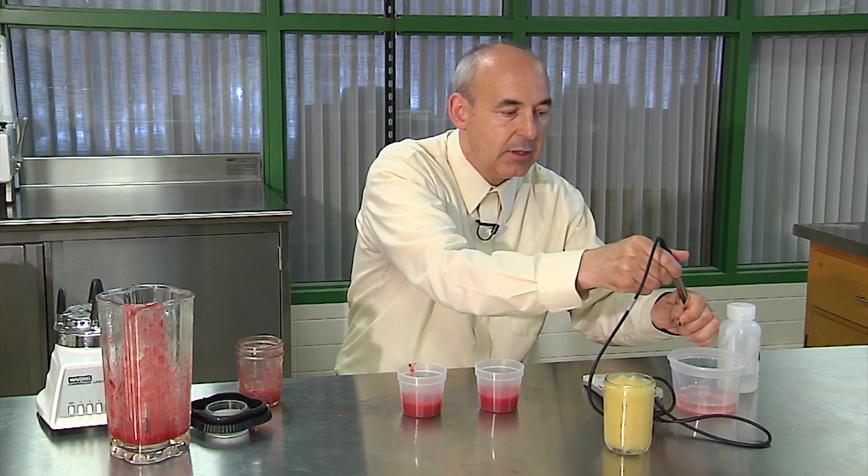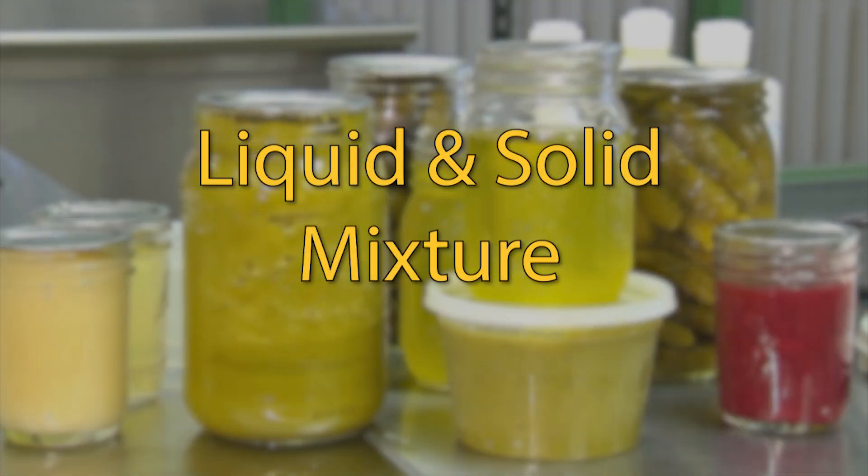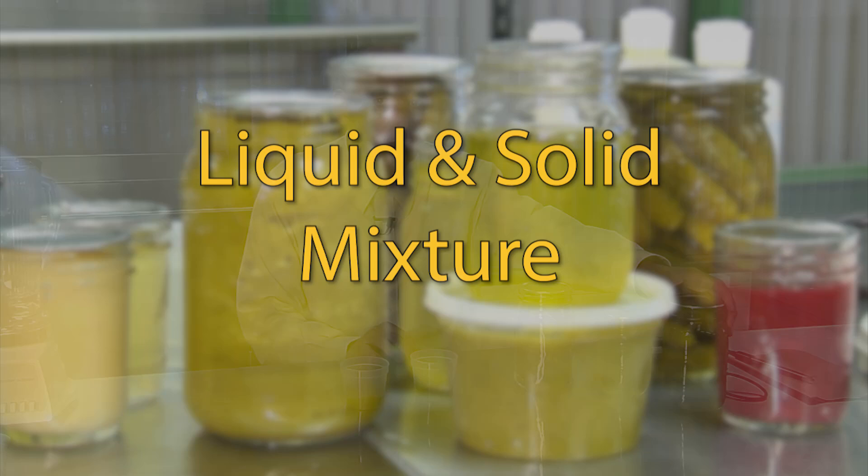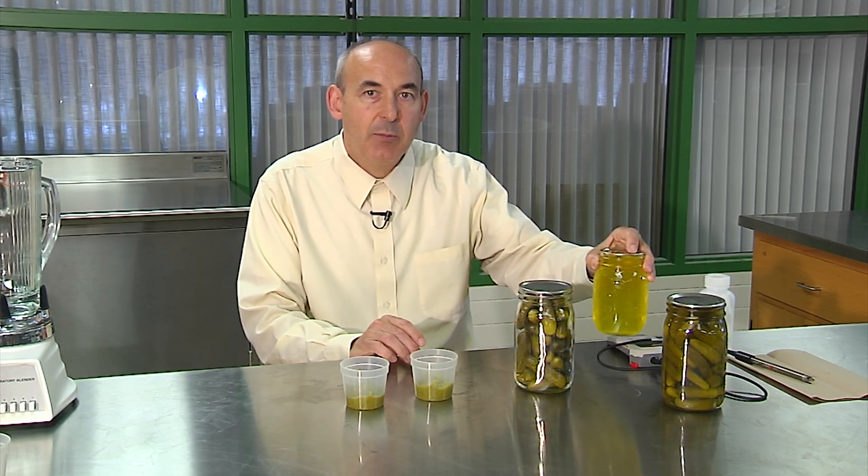The third category of products is ones that include liquid and solid particles. Pickles are a very good example of this type of product. What we have to do with this particular type of product is separate the components into the liquid fraction and the solid fractions. Once we have done that, we take the specific weight for each. For the liquids, I have measured this at about 49% of the total weight of our jar of pickles, while the cucumber or pickle part is 51% of the total weight.